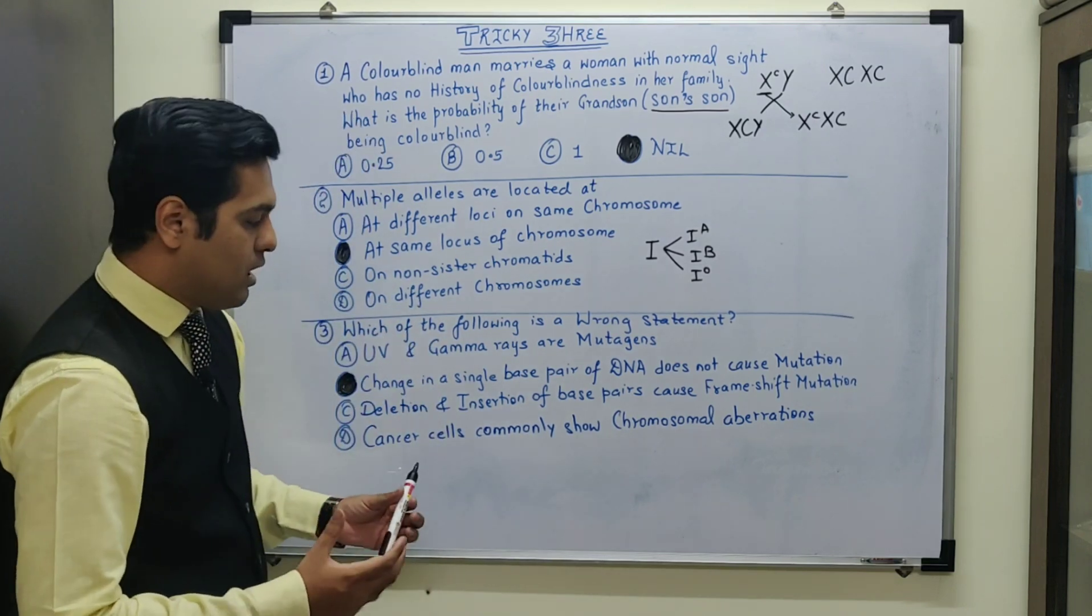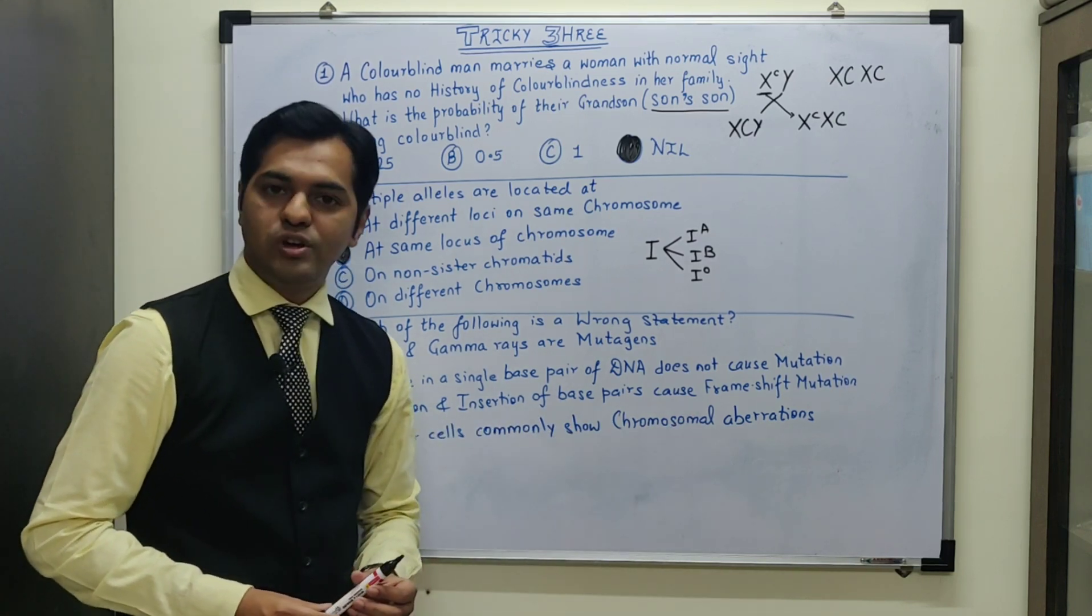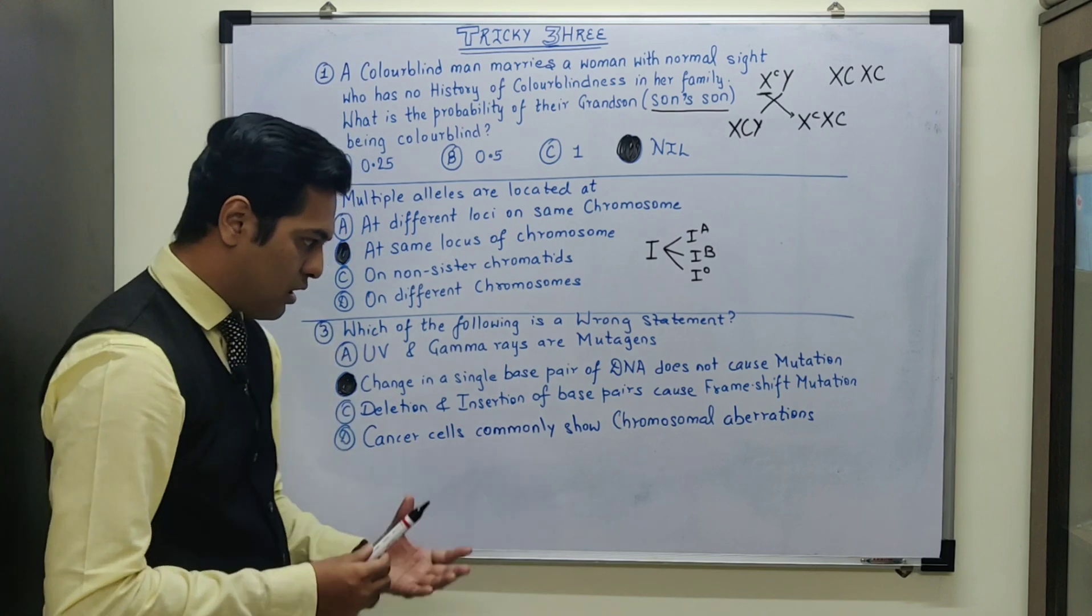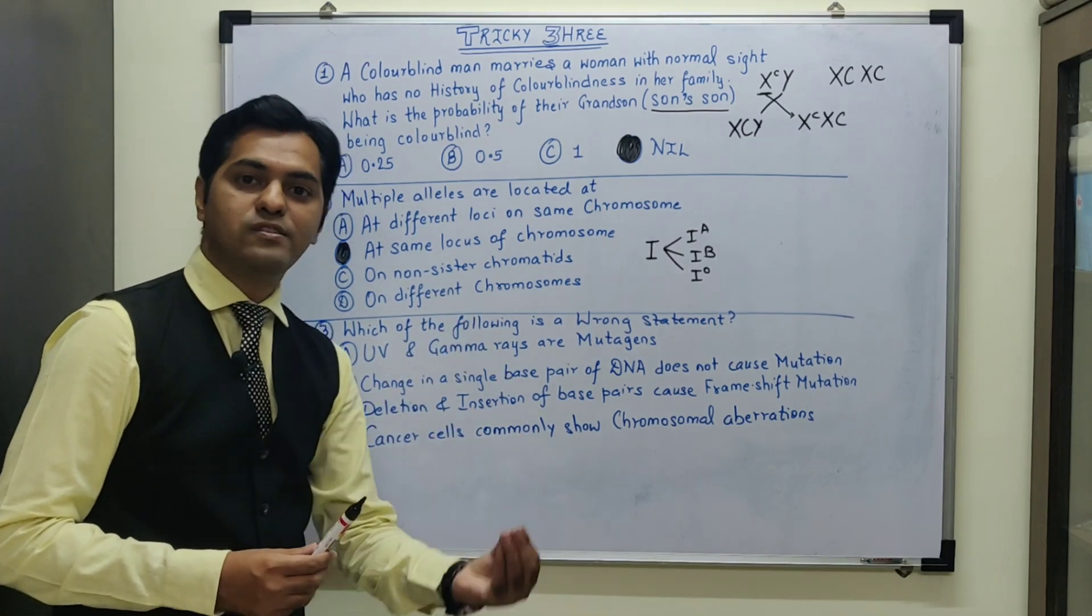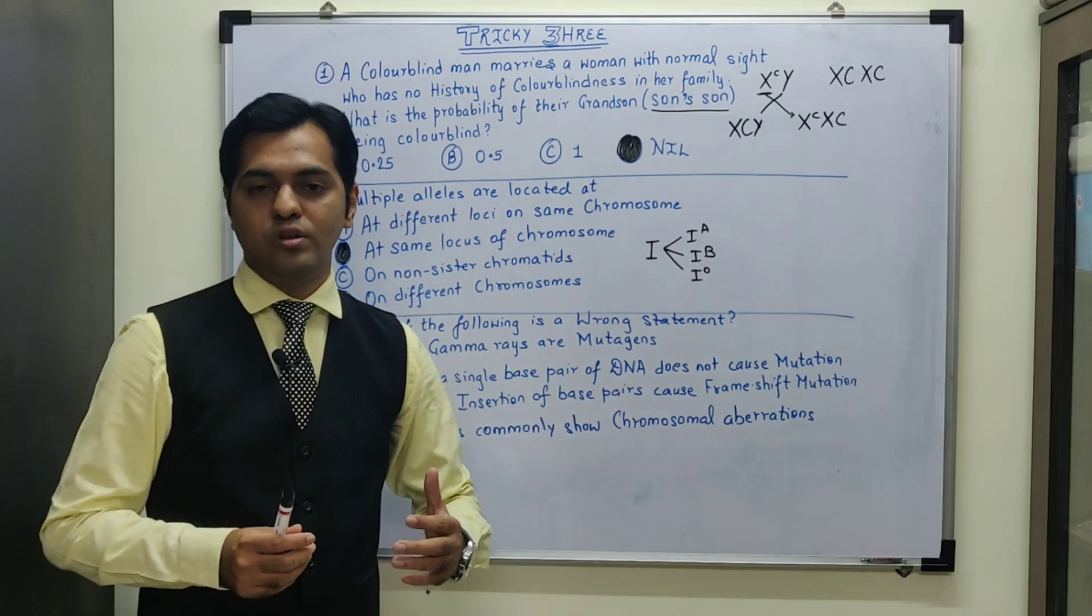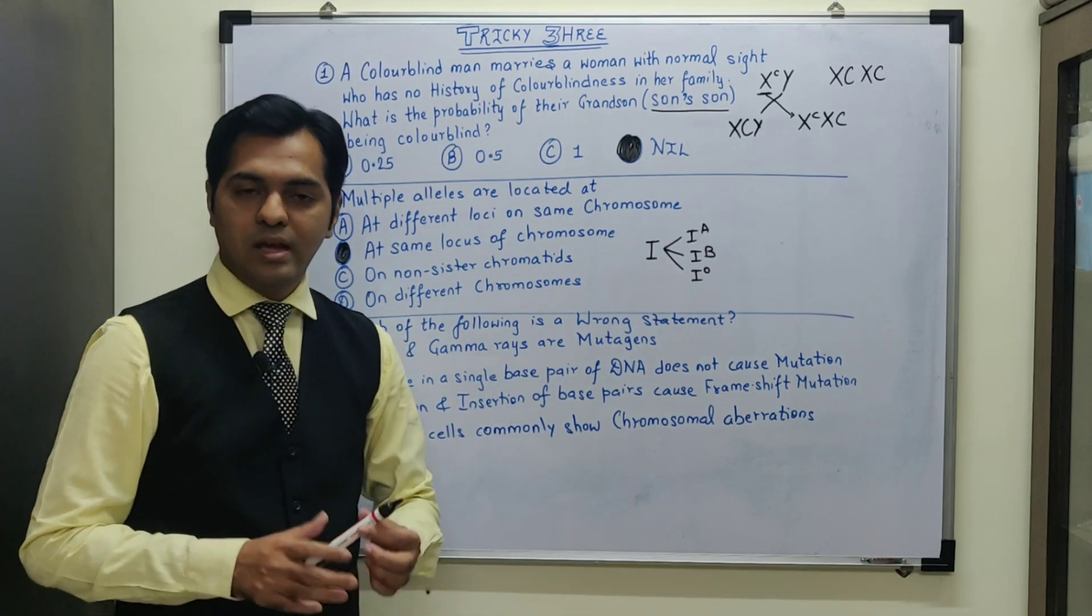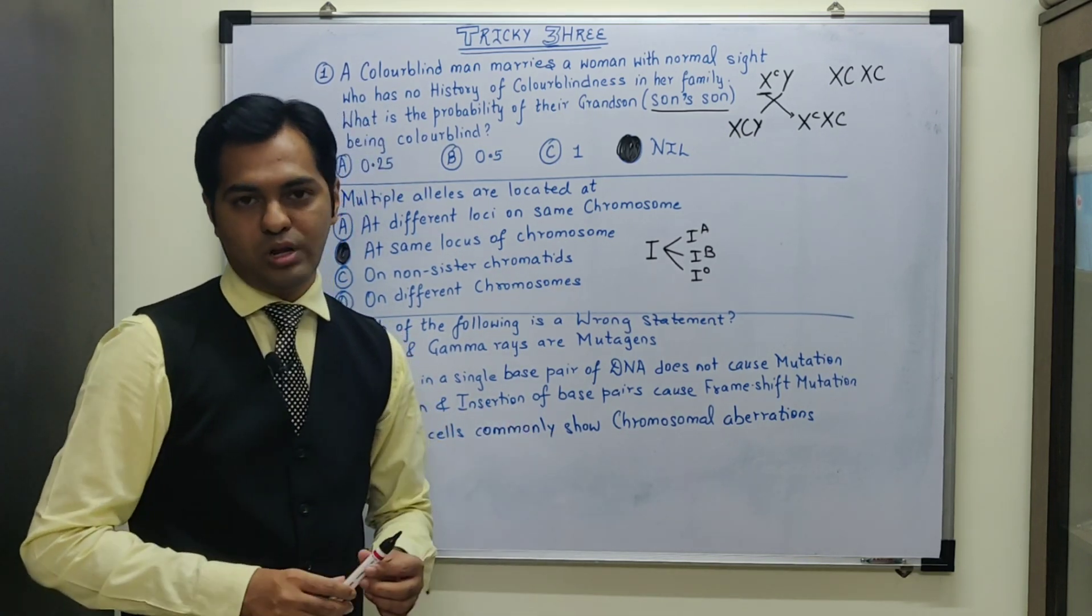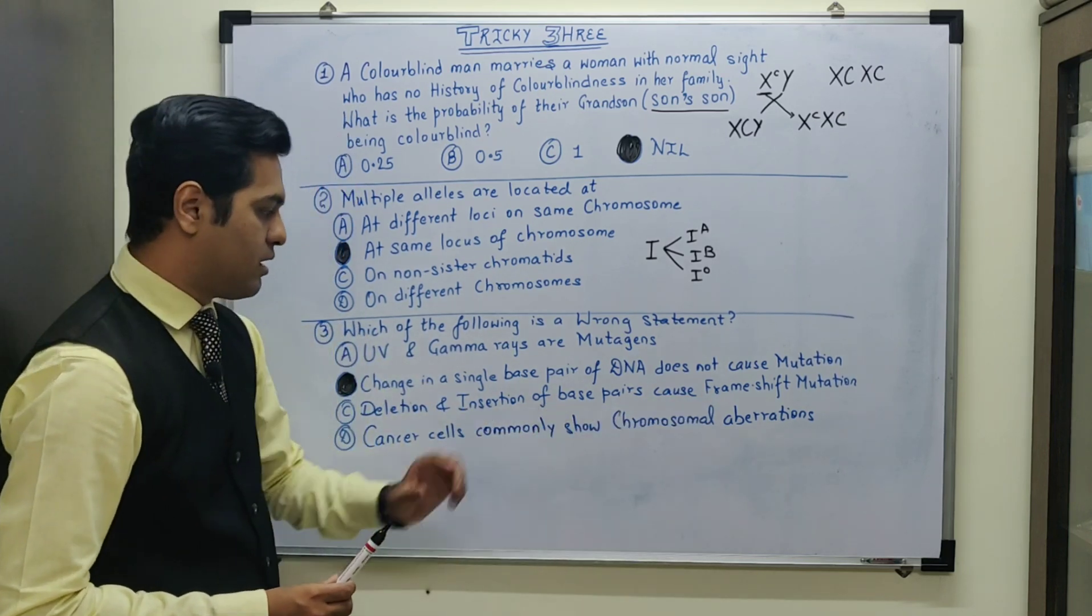Statement C mentions deletion and insertion of base pairs causes frame shift mutation. Yes, this is a correct statement again where deletion of a particular nitrogen base or insertion of a nitrogen base completely changes the sequence of codons from that particular point where deletion or insertion has taken place, and that is known as frame shift mutation. So this is definitely one of the type of gene mutation and it's a correct statement.